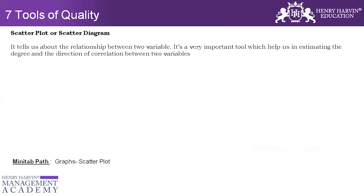The next of the seven tools of quality is the scatter plot, also known as a scatter diagram. This is a perfect tool used to identify the relationship between two different variables. Unlike Pareto, which is used to identify the top errors for one particular variable, the scatter plot establishes a relationship between two different variables. It tells us the relationship between them and is a very important tool.